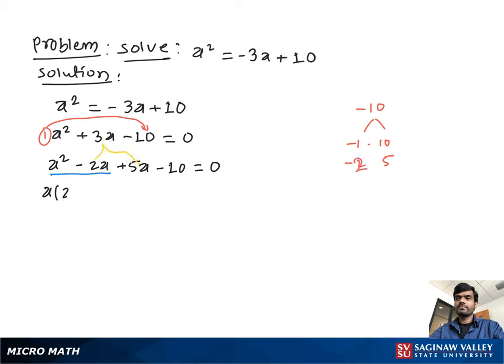From this pair we take out a as common, we have a(a-2). From this pair we take out positive 5 as common, so we have 5(a-2), all equal to 0. Now from both we take out (a-2) as common and we have remaining (a+5), all equal to 0.